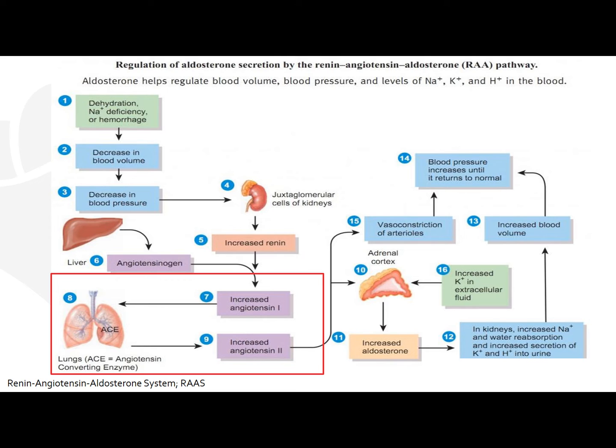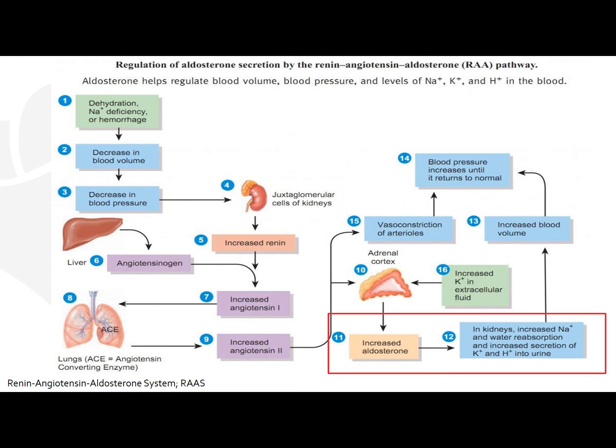Once you have an increase in angiotensin 2, this can lead to a response on the adrenal cortex, which can lead to an increase in aldosterone production. In the kidneys, this leads to increased sodium and water reabsorption and increased secretion of potassium and hydrogen ions into the urine.